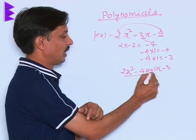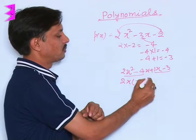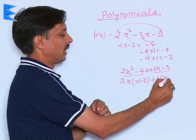I can make the pairs and this is 2x, so this becomes x - 2, from this is 1(x - 3).